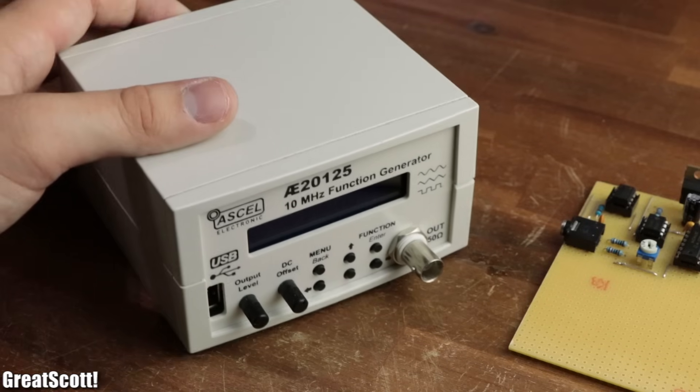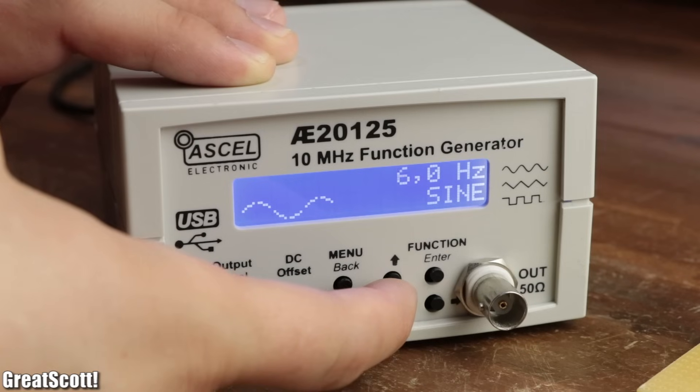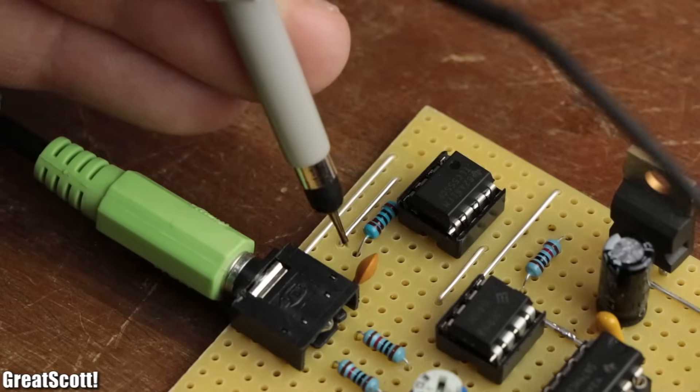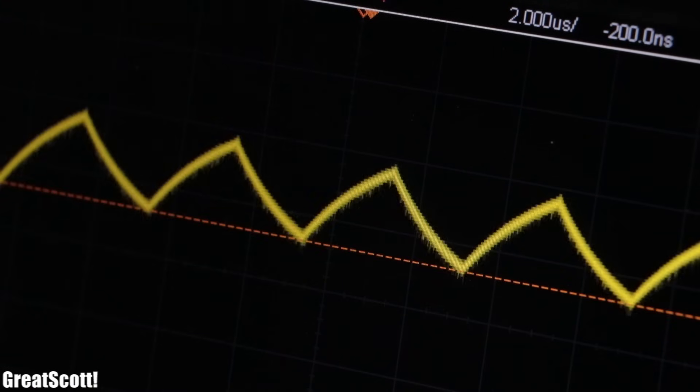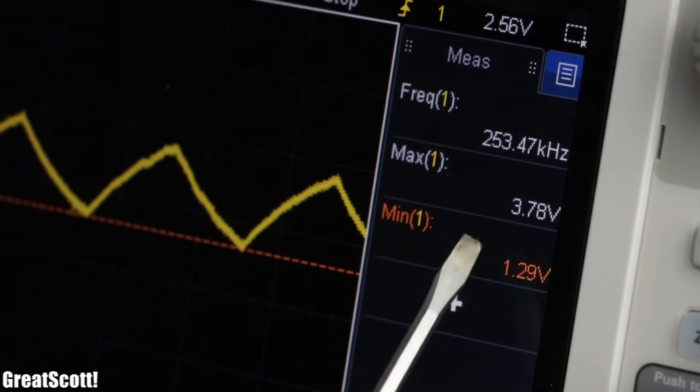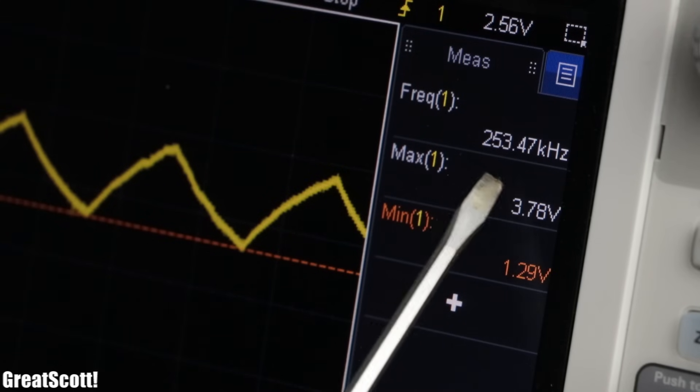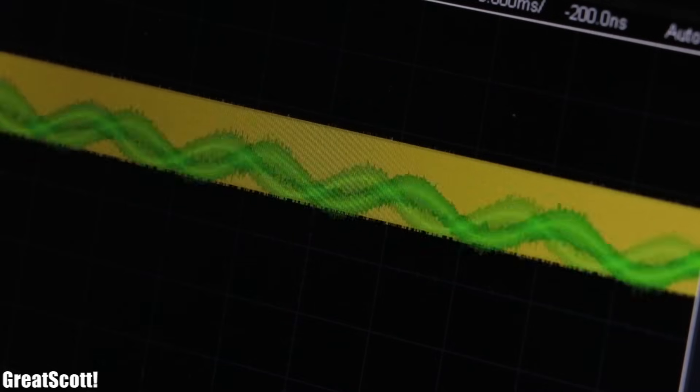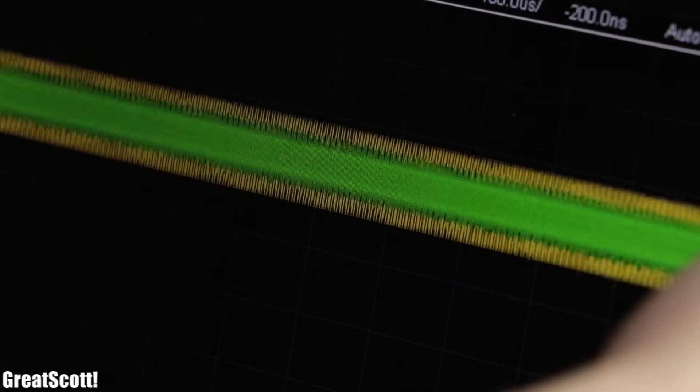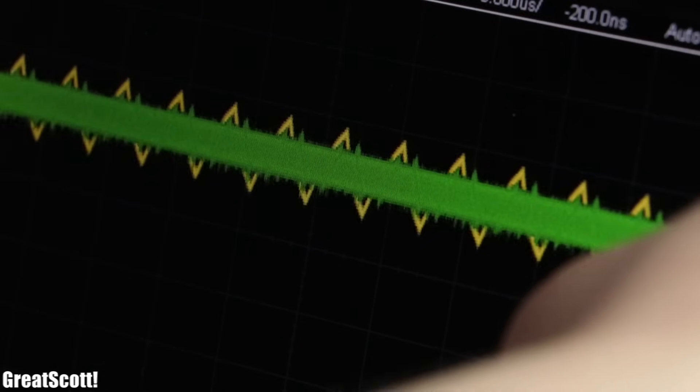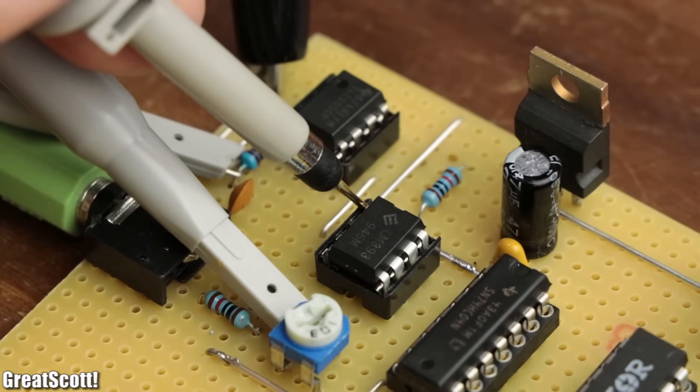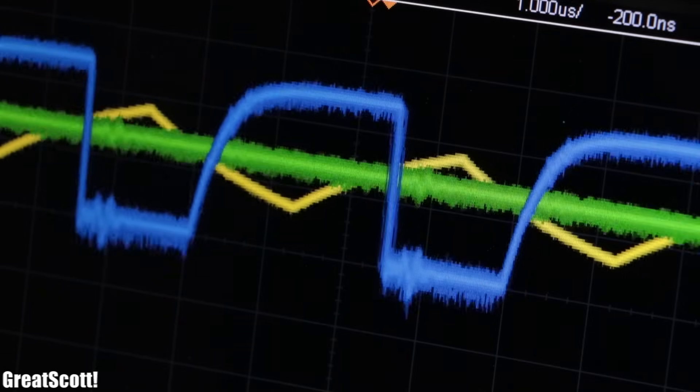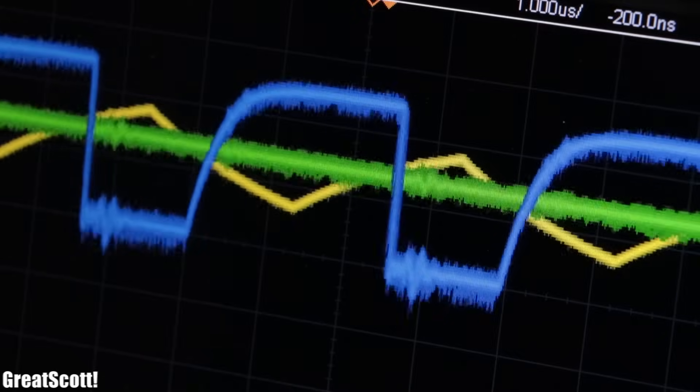As a first test, I hooked up my function generator, set to a sine wave with a frequency of only 1 Hz to the audio inputs. Since the 555 timer creates a triangle voltage between around 1.3 and 2.3 of the supply voltage, we also have to use a potentiometer to add a DC offset to the sine wave, so that it is completely submerged inside the triangle wave. If we now take a look at the output of the comparator, we can see how the slowly changing 1 Hz sine wave creates the modulated high-frequent square wave.